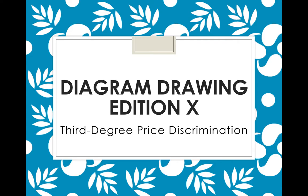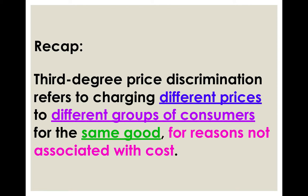Today we are going to talk about a diagram that most students have a lot of problems with — the diagram concerning third-degree price discrimination. Third-degree price discrimination basically refers to charging different prices to different groups of consumers for the same good, for reasons not associated with cost.